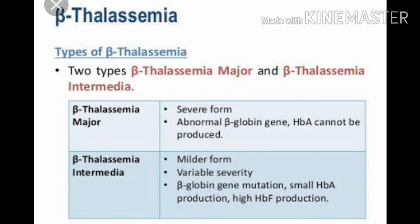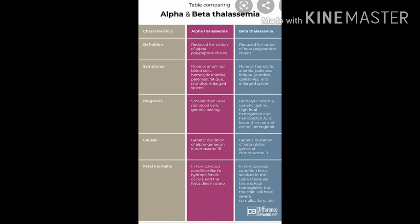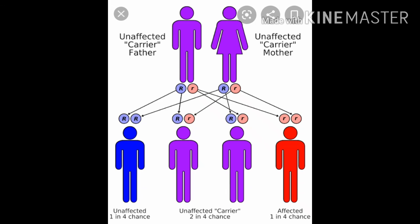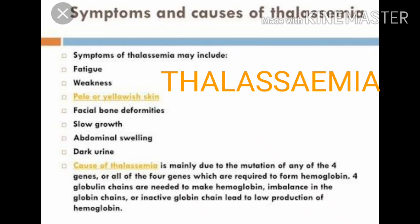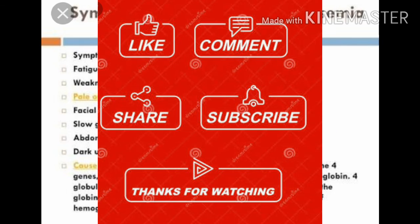यह sex chromosome पे नहीं होती है, autosomes पे होती है और यह एक recessive blood disease है — यानि कि जब दोनों genes express होंगे, recessive, तभी disease express होगी। It is transmitted from parents to offspring when both partners are unaffected carriers for the gene — heterozygous. यह तभी next generation में जाती है जब male और female दोनों carrier हों।